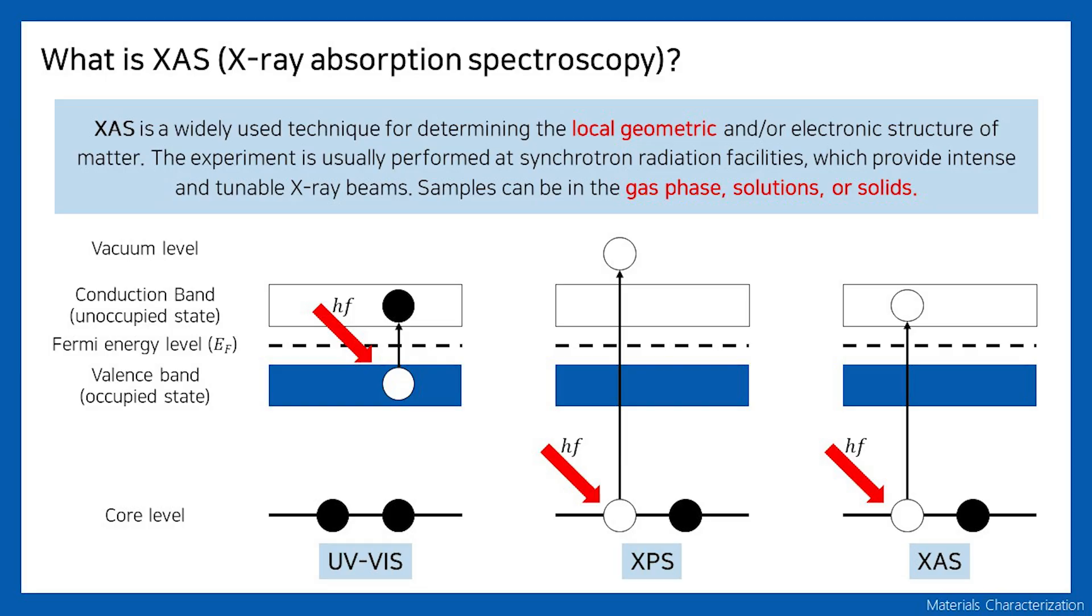XAS is X-ray Absorption Spectroscopy. This analysis method is similar to UV-Vis and XPS. XAS analysis can sensitively determine the local geometric and electronic structure of materials. The XAS experiment is performed at synchrotron facilities because it needs an intense and tunable X-ray source.